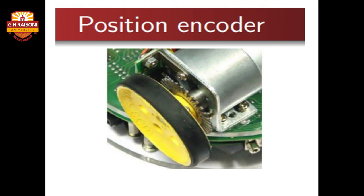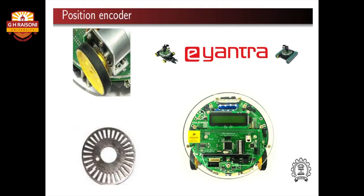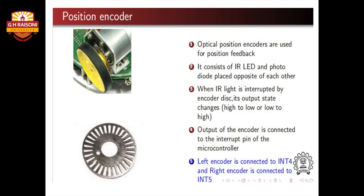As you can see in the picture, a position encoder is a piece of equipment attached to both wheels of the Firebird 5 bot. It is an optical position encoder that comprises a photodiode and an IR LED placed opposite to each other. When IR light is interrupted by the encoder disc, its output state changes from high to low or low to high. The output of the encoder is connected to the interrupt pin of the microcontroller — the left encoder to INT4 and the right encoder to INT5.